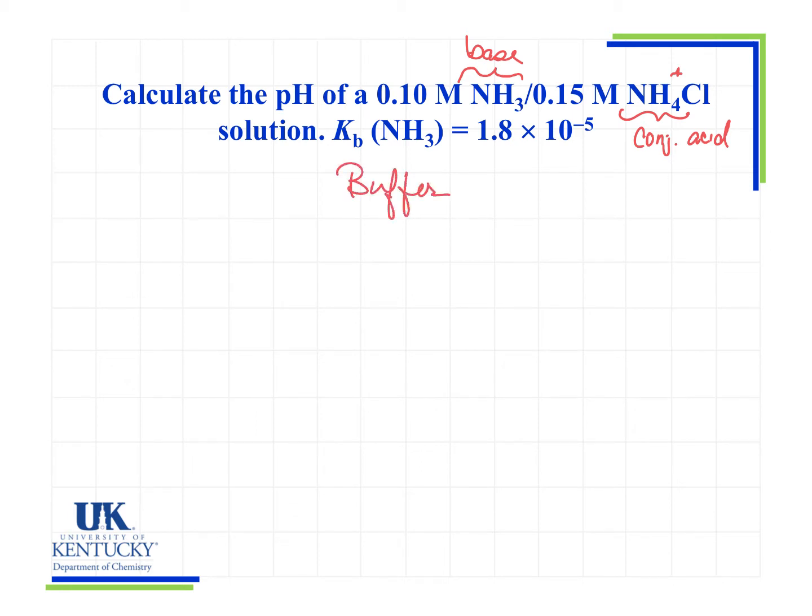And any time we want to calculate the pH of a buffer, we should use the Henderson-Hasselbalch equation. pH equals pKa plus the log of the concentration of base over the concentration of acid. Now students sometimes want to do something different if we've got a base buffer rather than an acid buffer, but we still use exactly this equation. So if we're wanting to get the pH, we need the pKa.